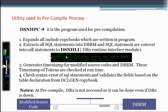DSNHLI is basically the DB2 Runtime Interface Module. If you look at your pre-compiled version of the COBOL program — the modified source code — you will see that your EXEC SQL statements will be commented out, and just below that you will have a call to DSNHLI. You can also see this at the time of debugging — your control is not going to those EXEC SQL statements but going directly to the call statement.